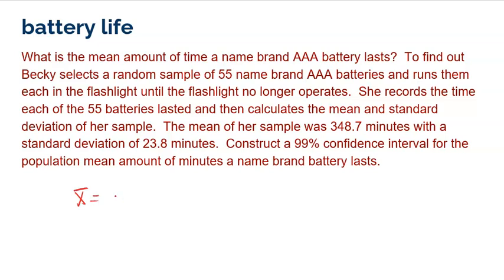Now here's what we know. We know the mean of our sample was 348.7. The standard deviation of our sample is 23.8, and our sample size was 55. These are the statistics that we're going to need to conduct the interval. We also know our level of confidence, in this case 99%. Now let's briefly walk through the steps.